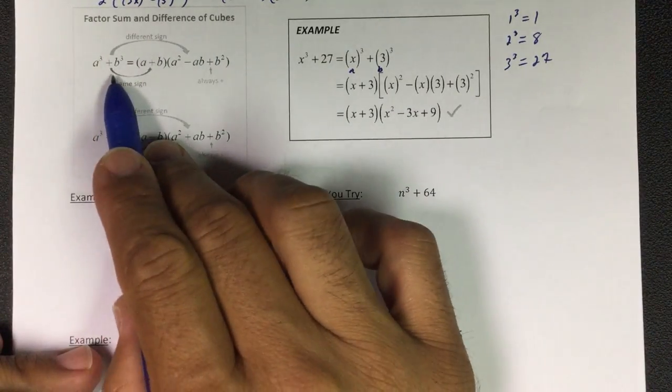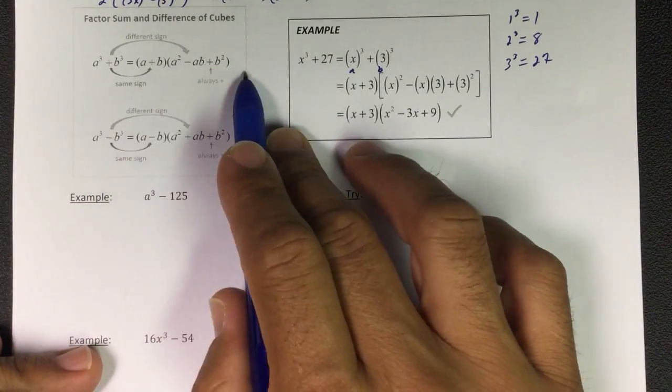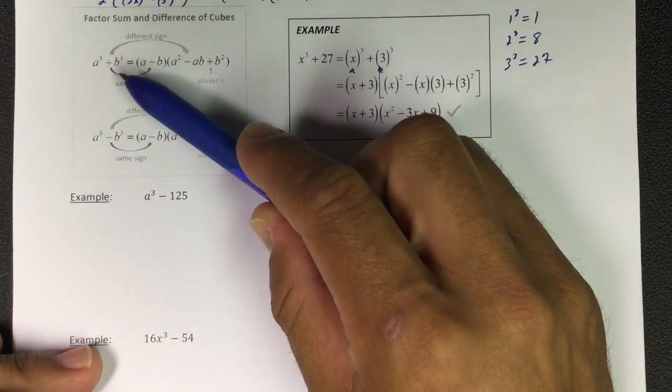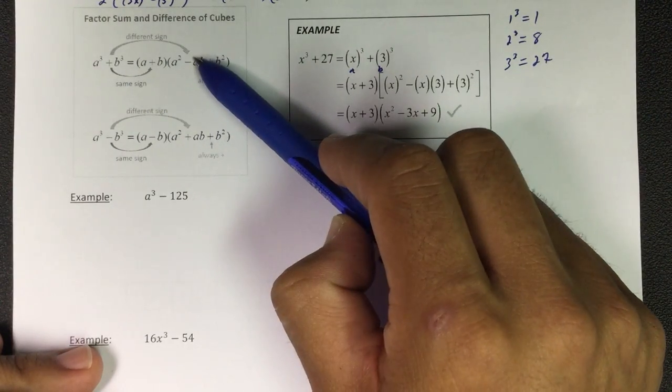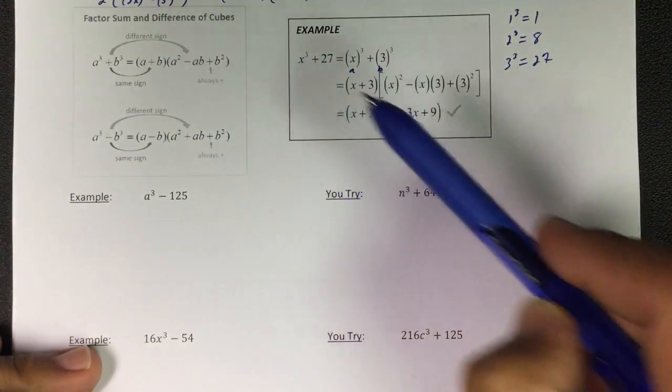If I'm adding 2 cubes or I'm subtracting 2 cubes, it's the same formula. All the letters go in the same spot. The only thing that changes is the signs. Whatever the sign is here goes with the first one.